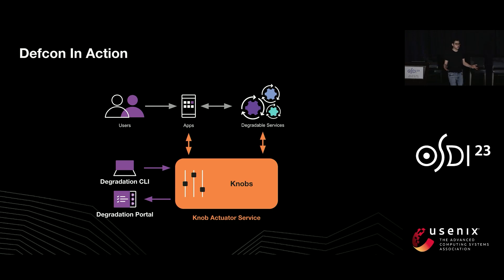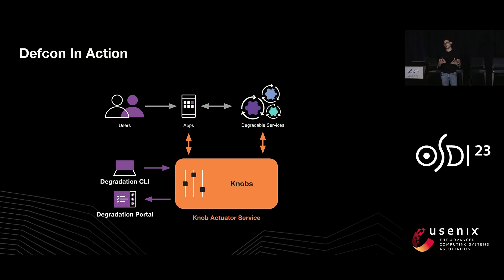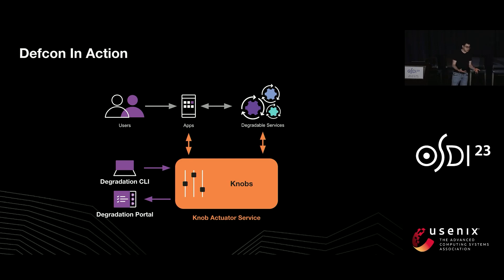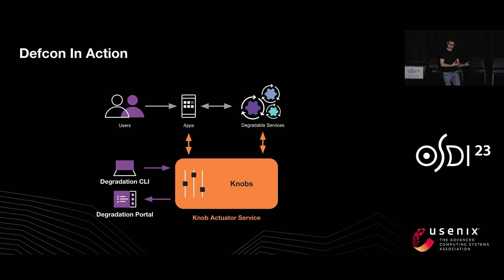At scale, we built a knob actuator service that controls, coordinates, and orchestrates the usage of knobs across all of our apps. This actuator service is controlled by a CLI that site operators and incident managers use during emergency scenarios. It also publishes information about what DEFCON is doing to a web-based portal so that site responders can monitor what's going on in real time.